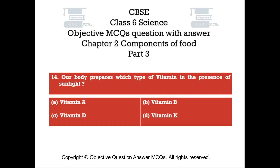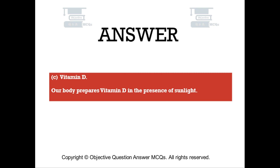Question number 14: Our body prepares which type of vitamin in the presence of sunlight? Option A: Vitamin A. Option B: Vitamin B. Option C: Vitamin D. Option D: Vitamin K. The right answer is Option C — Vitamin D. Our body prepares Vitamin D in the presence of sunlight.